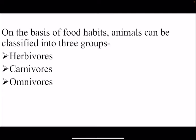On the basis of food habits, animals can be classified into three groups: herbivores, carnivores, and omnivores.